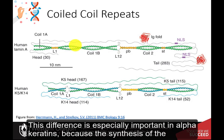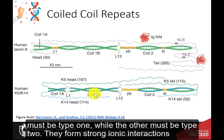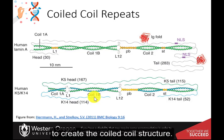This difference is especially important in alpha-keratins because the synthesis of the subunit dimer, called the coiled coil, requires that one protein coil must be type 1 while the other must be type 2. They form strong ionic interactions to create the coiled-coil structure.